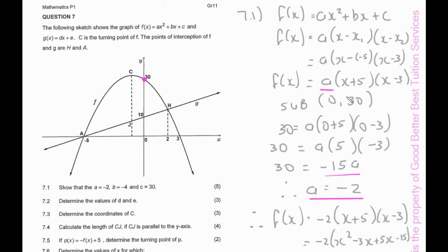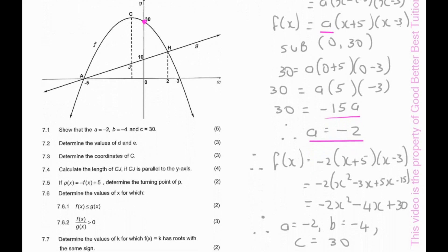We substitute a = −2 into the equation: −2(x + 5)(x − 3). Multiplying out gives us −2x² − 4x + 30. This means a = −2, b = −4, and c = 30.